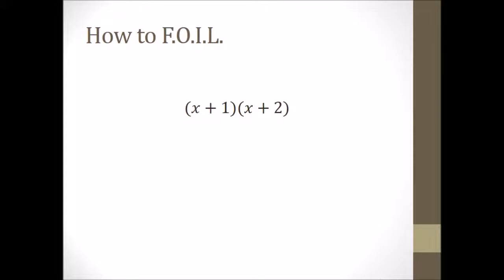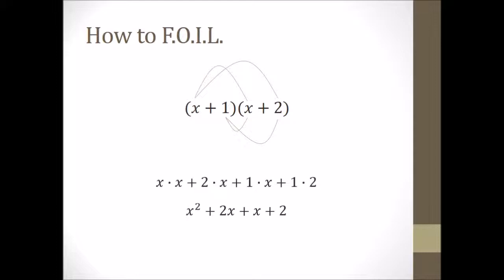Now let's try this with an actual set of binomials. Remember FOIL: first, outside, inside, last. So the first terms would be X times X, outside terms would be 2 times X, inside would be 1 times X, and last would be 1 times 2. Put it all together and you have XX, 2X, 1X, and 1 times 2. Simplify that: X squared plus 2X plus X plus 2, which simplifies again to X squared plus 3X plus 2.